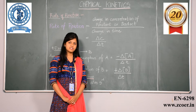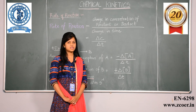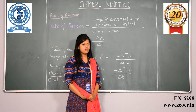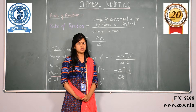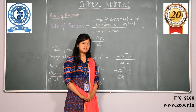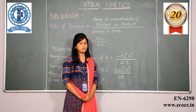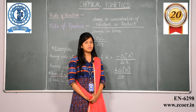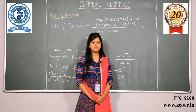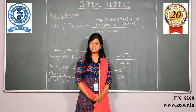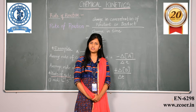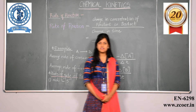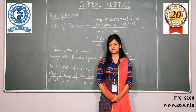Let us look at the next chapter which is chemical kinetics. Chemical kinetics is the branch of physical chemistry which deals with the rate and mechanism of chemical reactions. Now the rate of reactions can be influenced by many factors such as pressure, temperature, or catalyst. Let us understand what is rate of reaction.